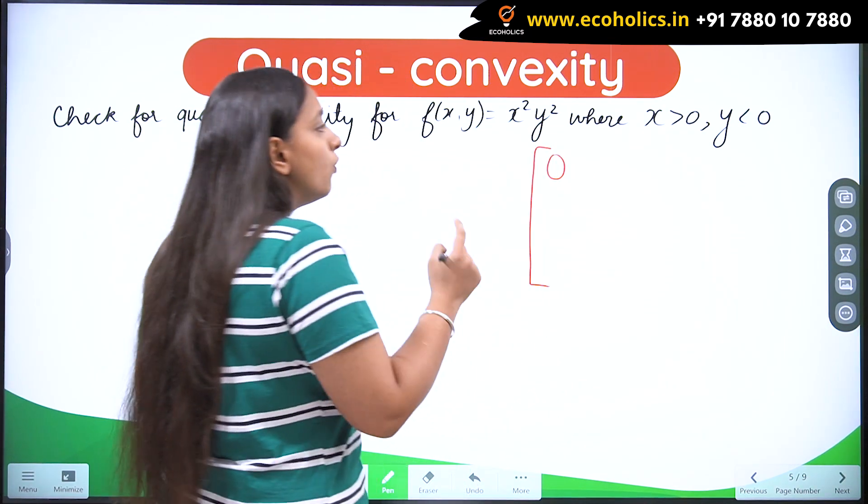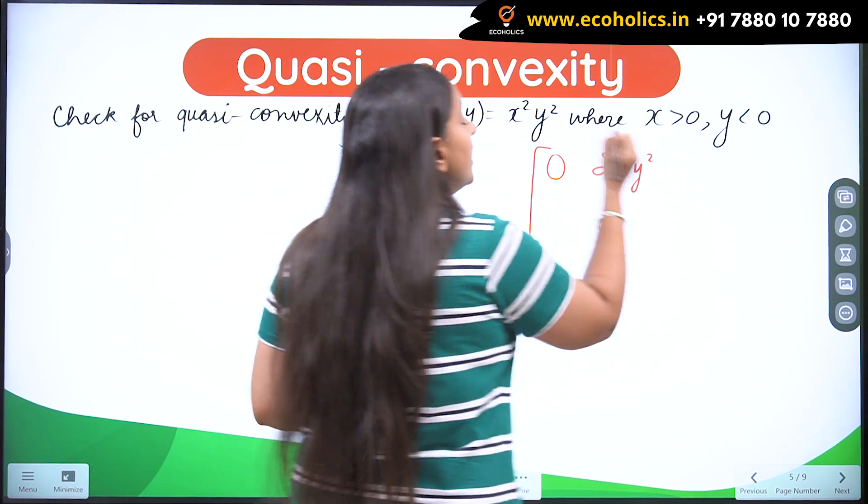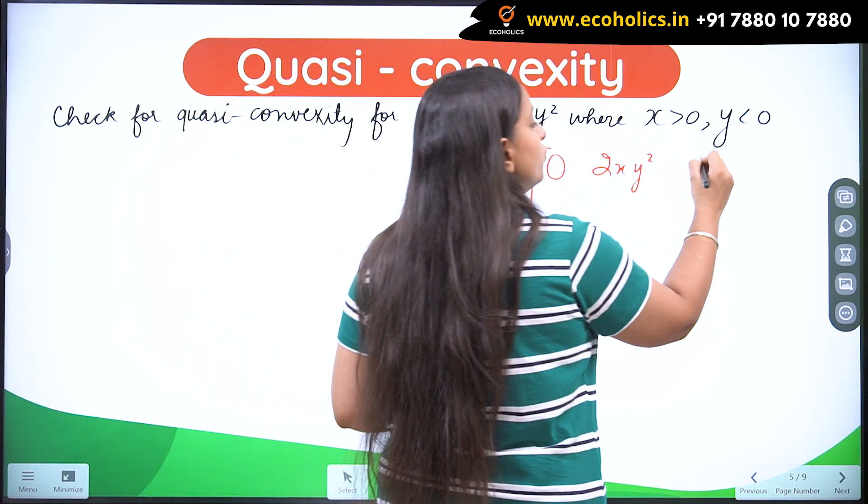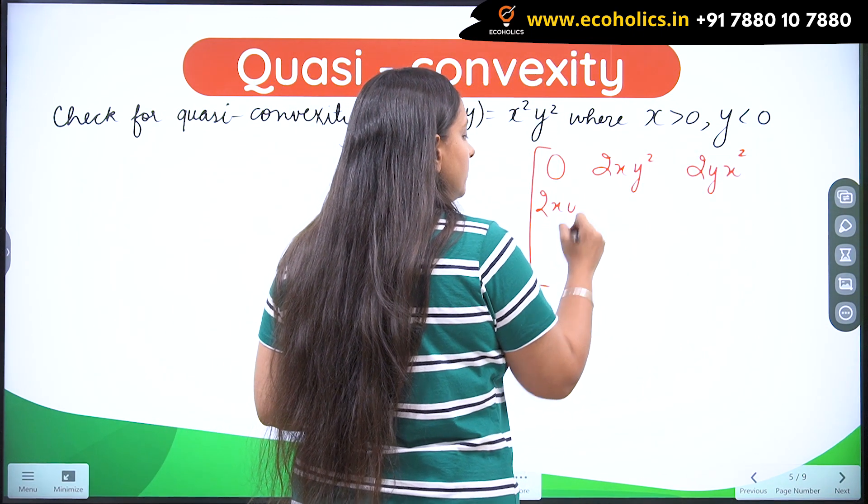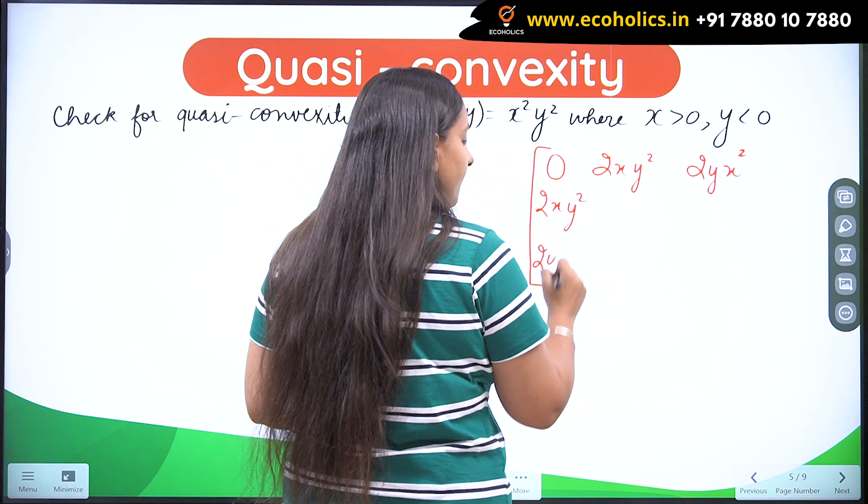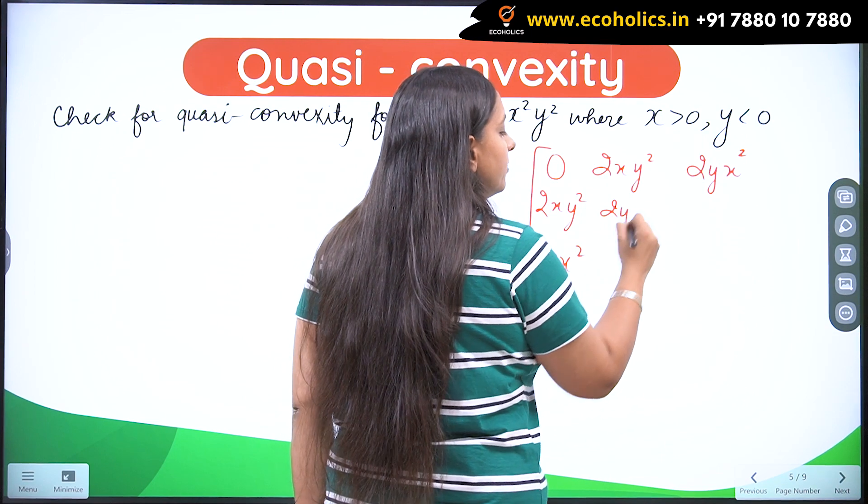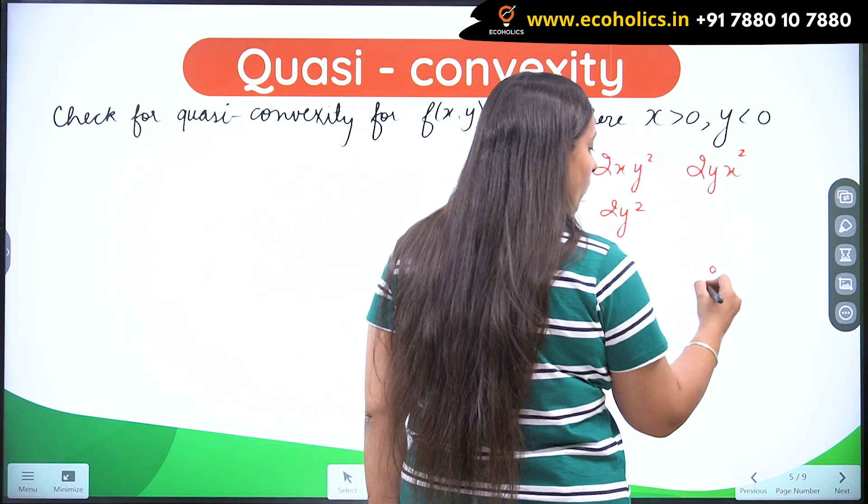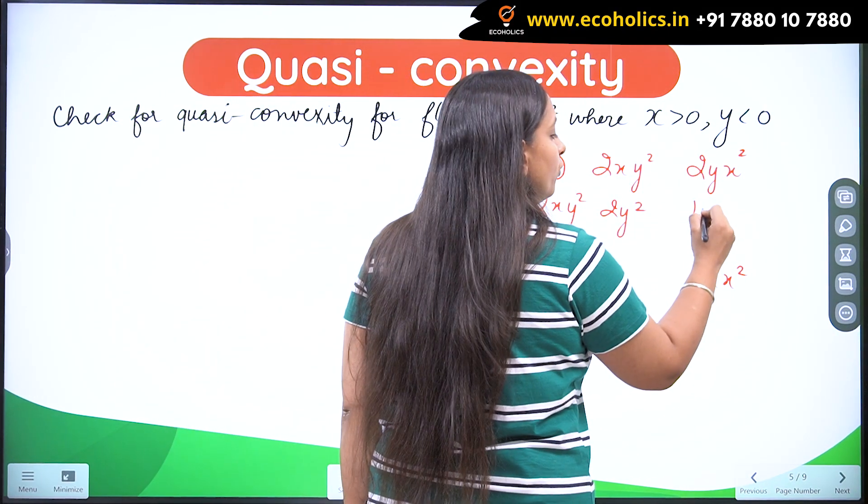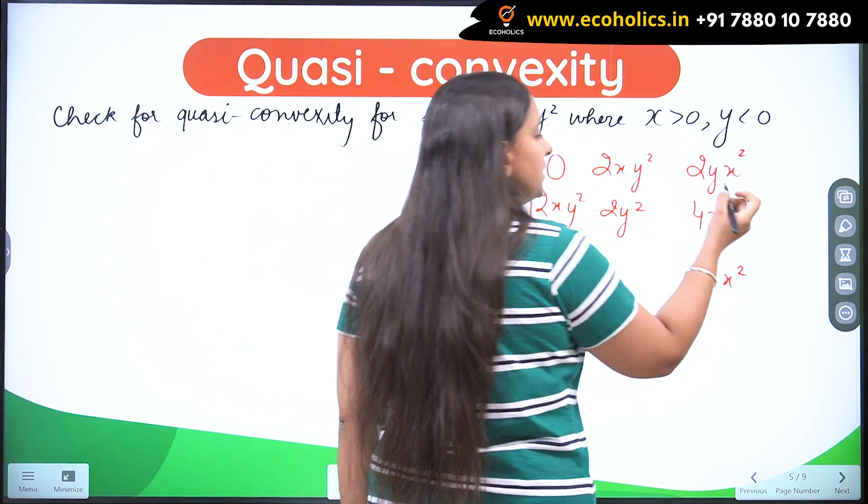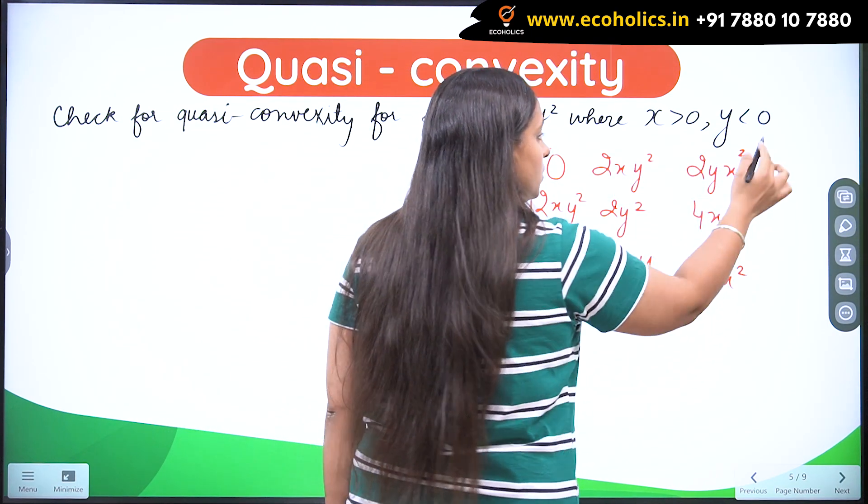So I am going to put 0. What is going to be f1? It is going to be 2xy square. f2 would be equal to 2yx square. Right? Now the same numbers over here. Now f11 would be 2y square. f22 would be 2x square. Now f12 is going to be 4xy. Similarly, f21 is going to be 4xy. So this is it.